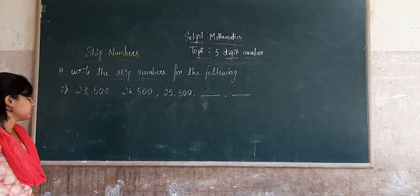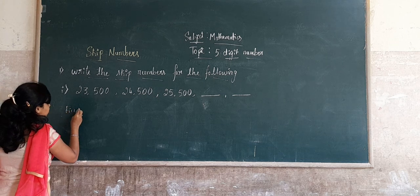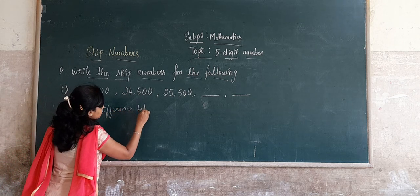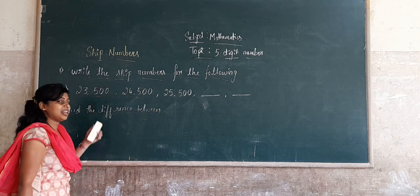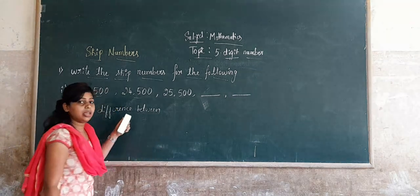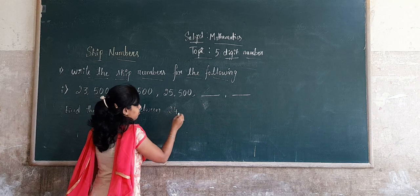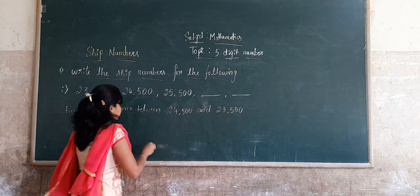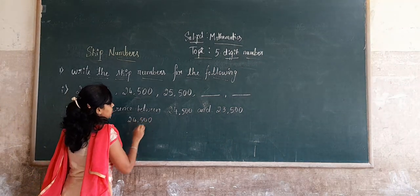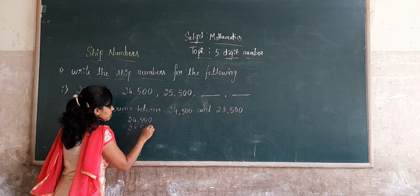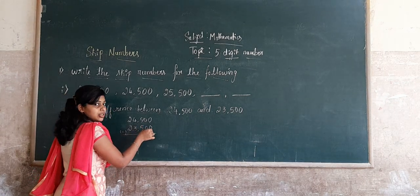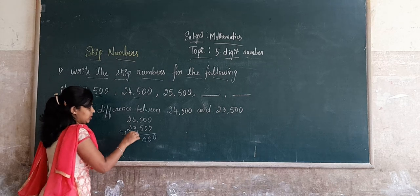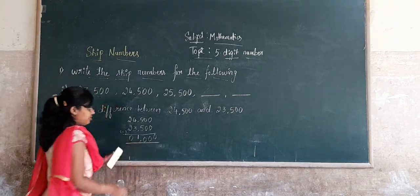To find the next skip numbers, we find the difference between two numbers — that means subtraction. We subtract the smaller number from the bigger number: 24,500 minus 23,500. Working digit by digit: 0 minus 0 is 0, 0 minus 0 is 0, 5 minus 5 is 0, 4 minus 3 is 1, 2 minus 2 is 0. So we get the difference is 1,000.